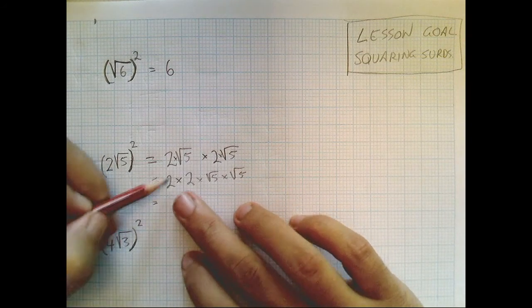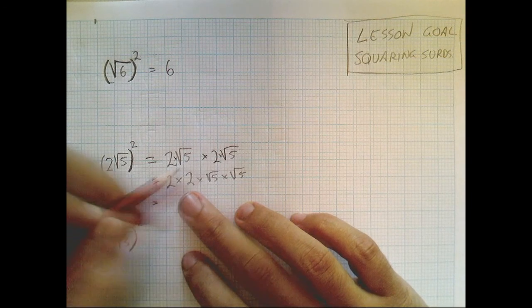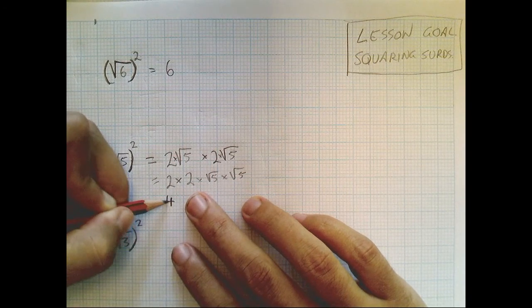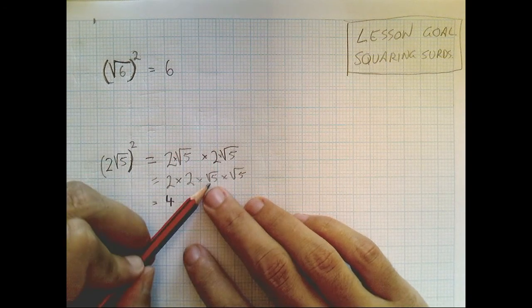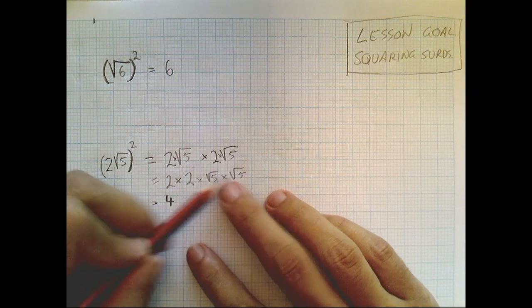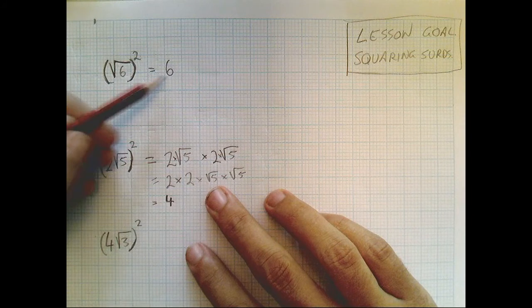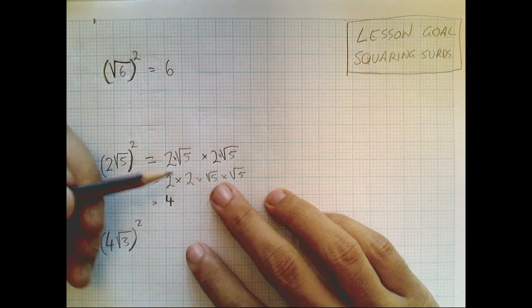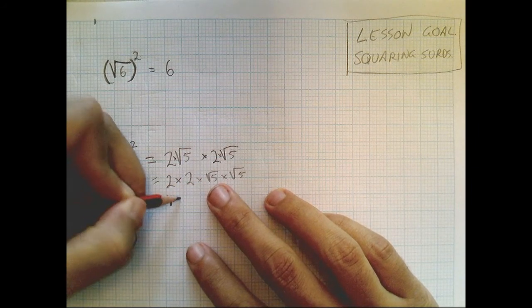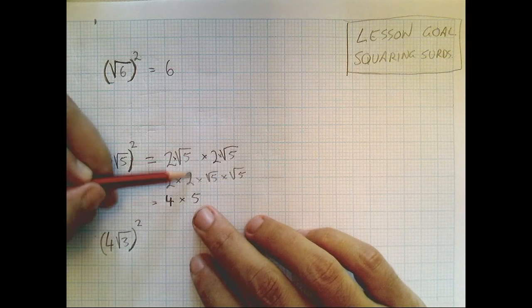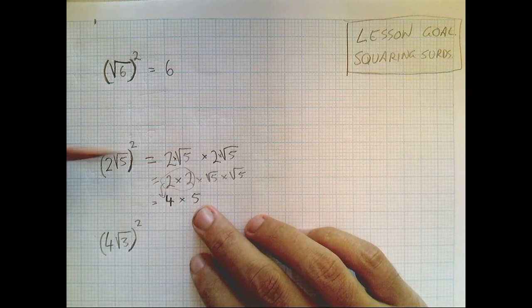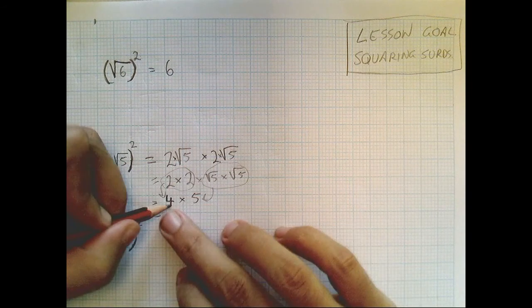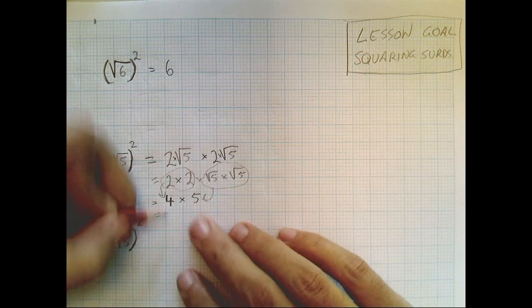Okay, now that we've got this, we can see that we've got our whole numbers here, and we've got our surds here. Two times two is easy enough, that's four. Now root five times root five. Now that really just means root five squared, and from this question here we know that root of something squared is equal to itself. So root five squared is going to be five. So this is equal to four, and this is equal to five. Once we finish it off, four times five will be equal to twenty.